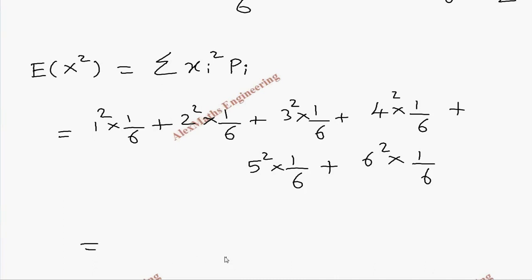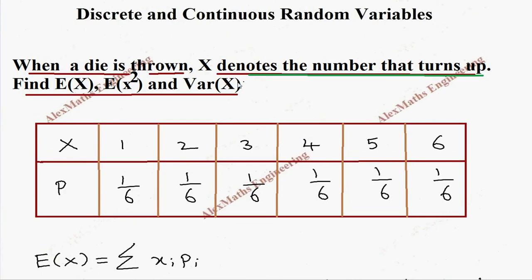Now, we have a common denominator 6. 1² is 1, 2² is 4, 3² is 9, 4² is 16, 5² is 25, 6² is 36. By adding everything, we get 91 by 6. So we completed the second part.